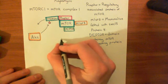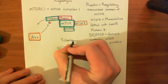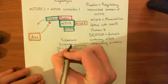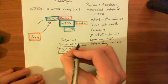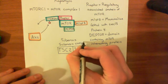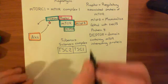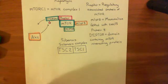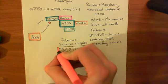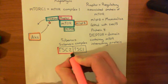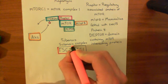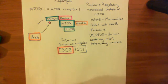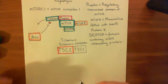Together these form the tuberous sclerosis complex. Their role is as a GTPase — specifically, TSC2 is a GTPase which will hydrolyze GTP to GDP when it has the tuberous sclerosis complex 1 bound to it.